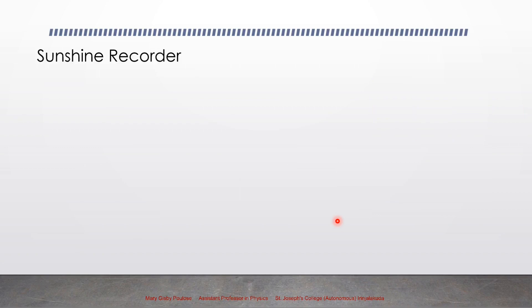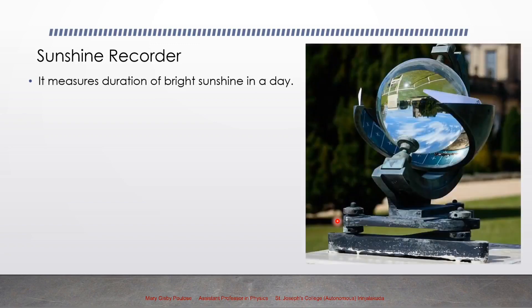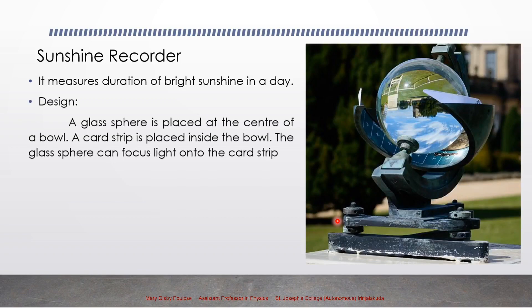Next, we have an instrument used to measure the duration of bright sunshine in a day. A glass sphere is placed at the center of a bowl, and a card strip is placed inside the bowl. The glass sphere can focus light onto the card strip.